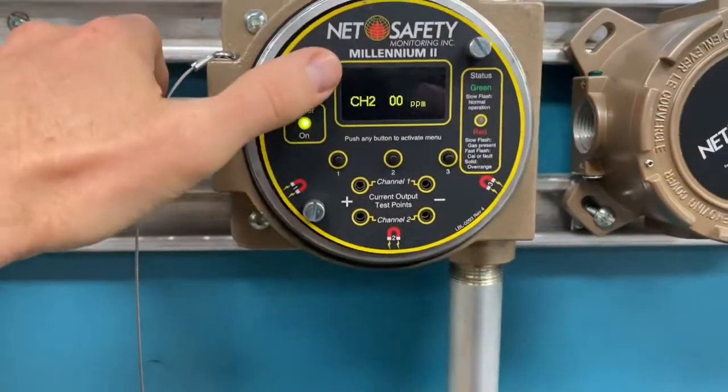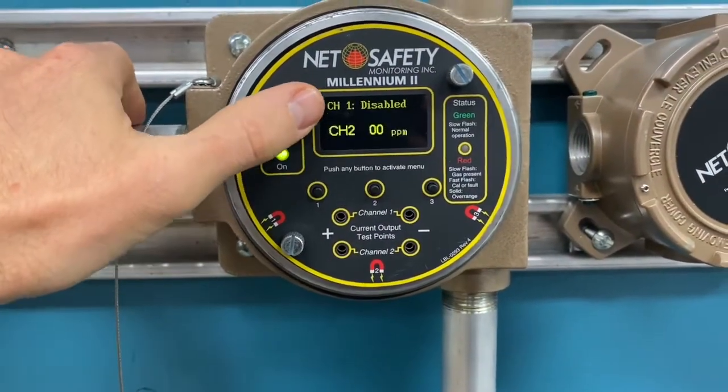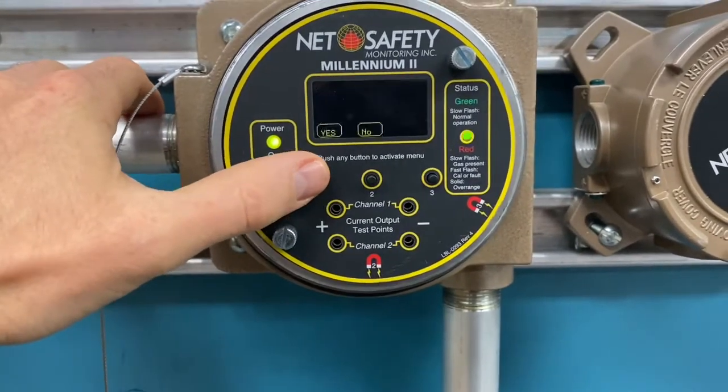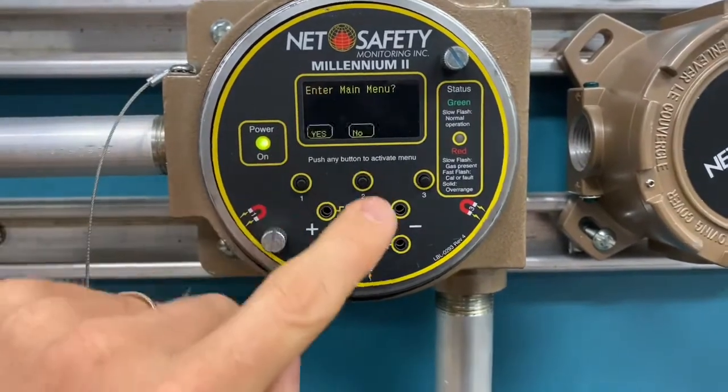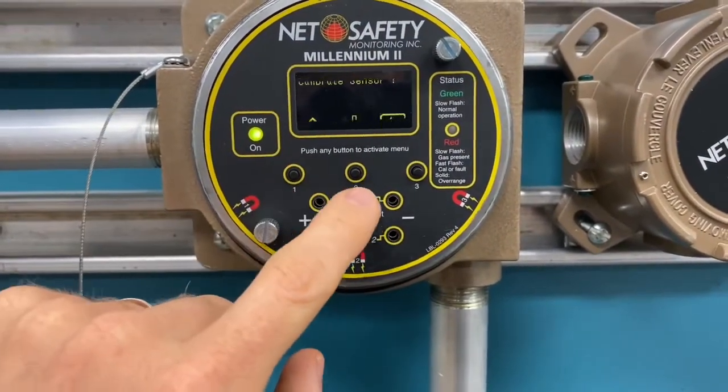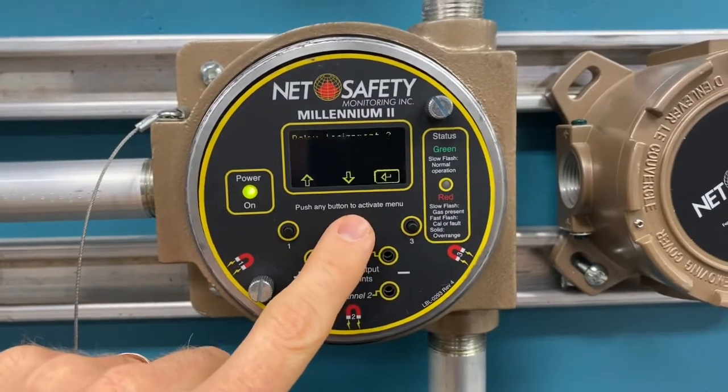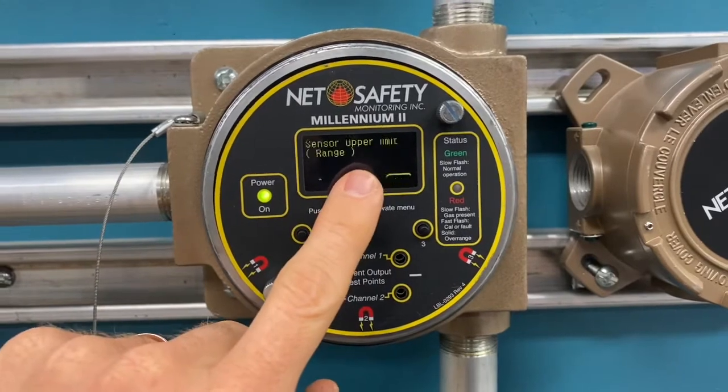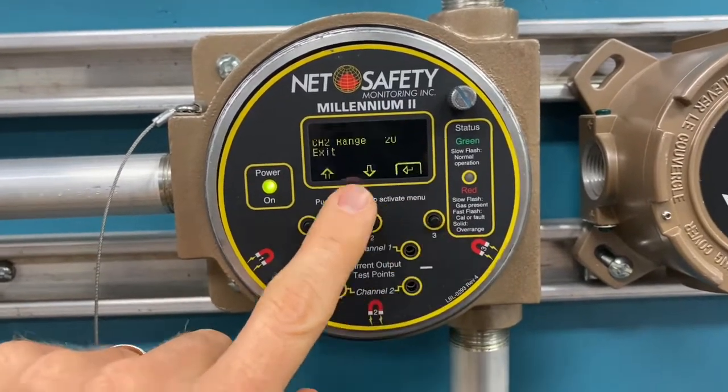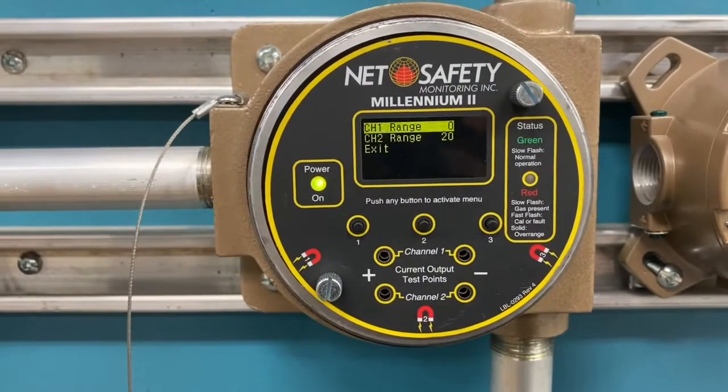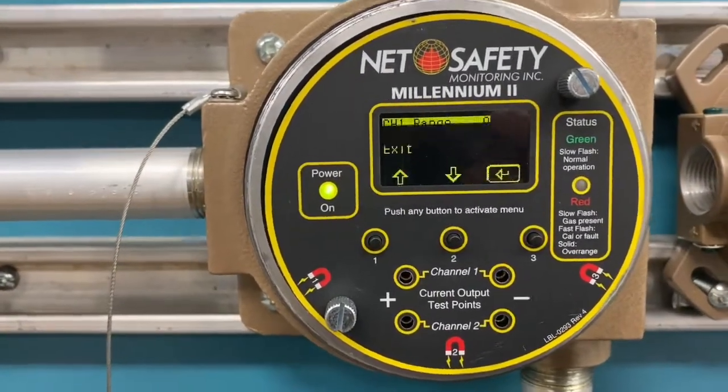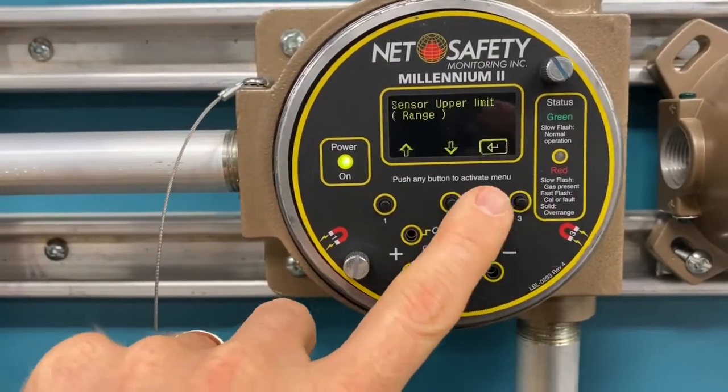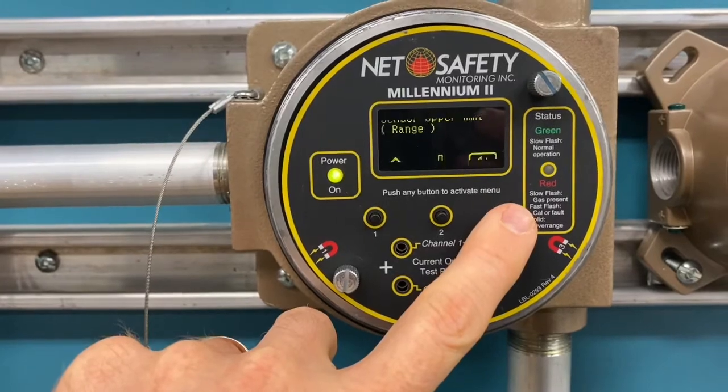The lab says we want to have channel one disabled and channel two enabled. You can see that's the way it's set up right now. One other thing we want to check is we want to make sure the range is set correctly. I push button one, enter the main menu, click one again to say yes. Now we're going to scroll down. The sensor upper limit or range needs to be set for 20, because that's what our sensor is configured for, 20 PPM. Now I'm just going to exit. We're going to perform a calibration.